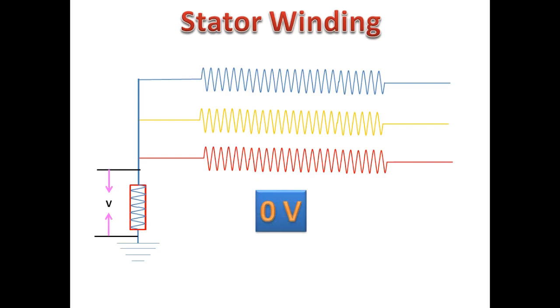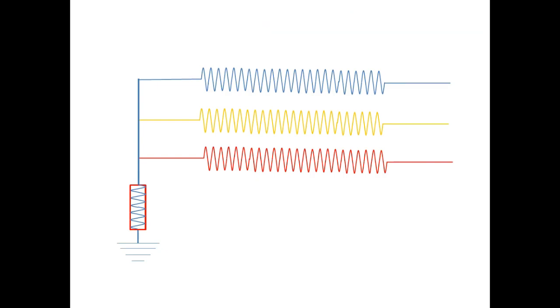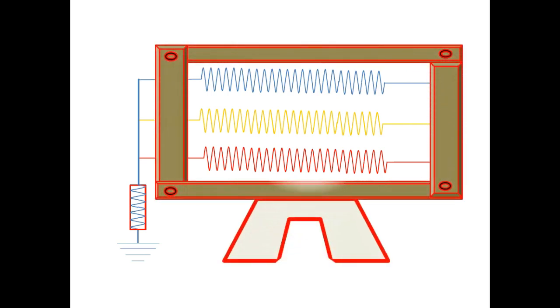Now we go for some case studies. In all generators, the stator winding is covered completely with an outer steel part known as the yoke. In case one, let us consider that 25% near the phase side winding has been touched with the yoke accidentally.